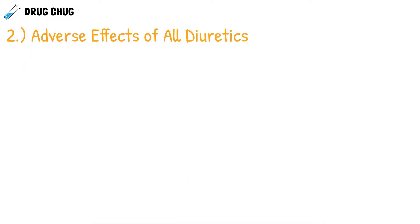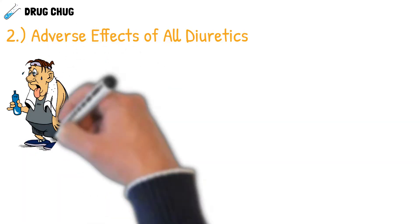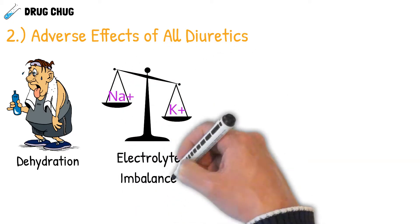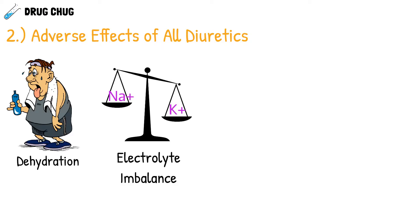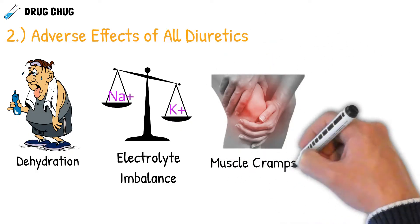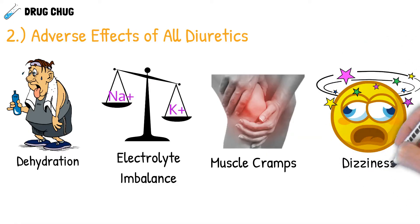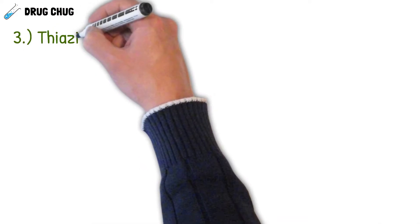All three types of diuretics share these general adverse effects. First, they can cause dehydration — if they work too well and you pee too much, you become dehydrated. Second, they can cause electrolyte imbalance, since they waste sodium and sometimes potassium. Third, they can cause muscle cramps due to that electrolyte imbalance. Finally, they can cause dizziness because losing volume lowers blood pressure.